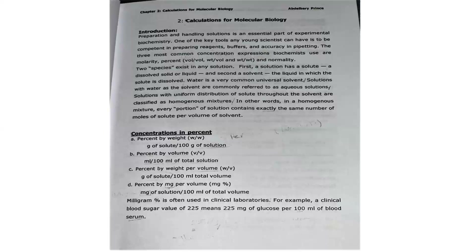Concentration and percent. Types include: percent by weight, percent by volume, percent by weight per volume, and percent by milligram per volume. Milligram percent is often used in clinical laboratories. For example, a clinical blood sugar value of 225 means 225 milligrams of glucose per 100 milliliters of blood serum.